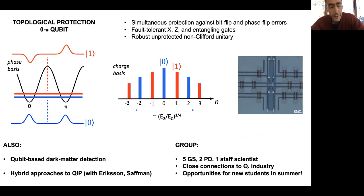So other projects in the group include a new approach to detection of dark matter axions that's based on a superconducting qubit. And I've got a long-standing collaboration with both Mark Erickson and Mark Saffman, where we're working on various hybrid approaches to quantum computing using superconducting semiconducting hybrid systems or hybrid systems that involve superconductors and neutral Rydberg atoms.